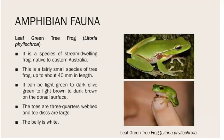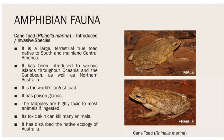The leaf green tree frog is a stream-dwelling frog native to the Australian region. Its length is about 40 mm. Its skin color ranges from dark olive green to light brown to dark brown, with a white belly. The toes are three-quarter webbed and the two toe discs are large.